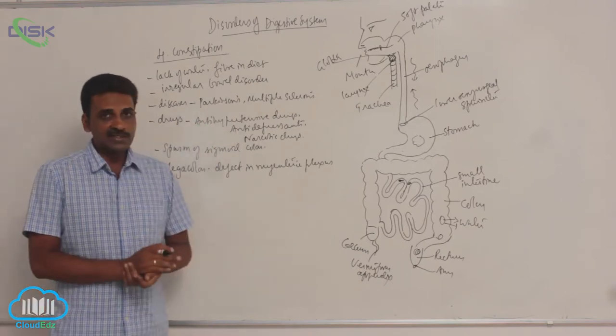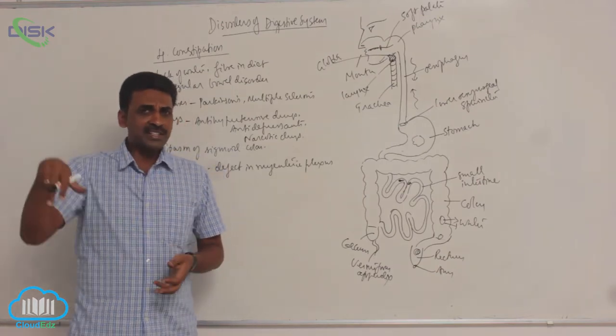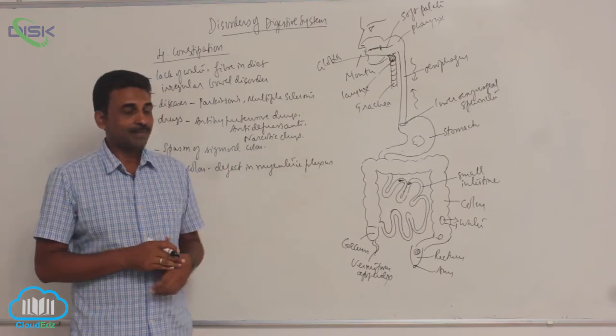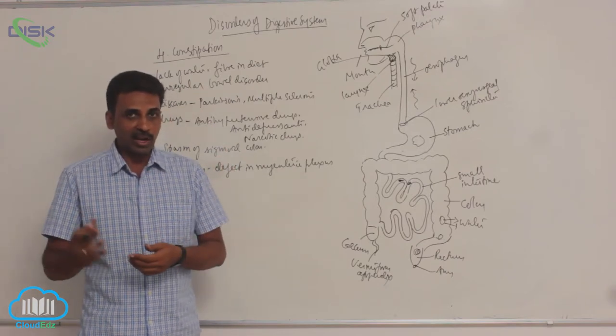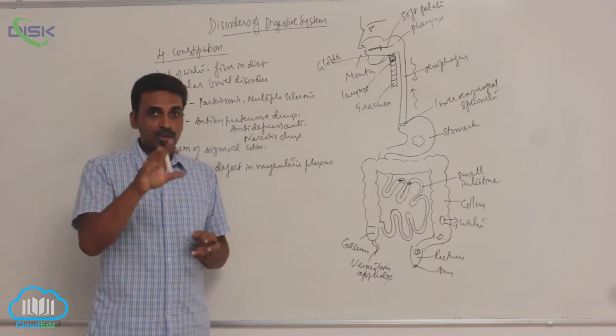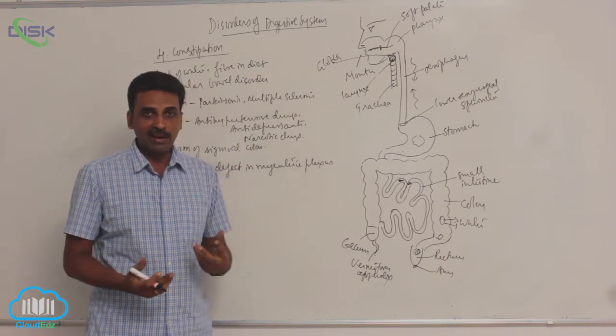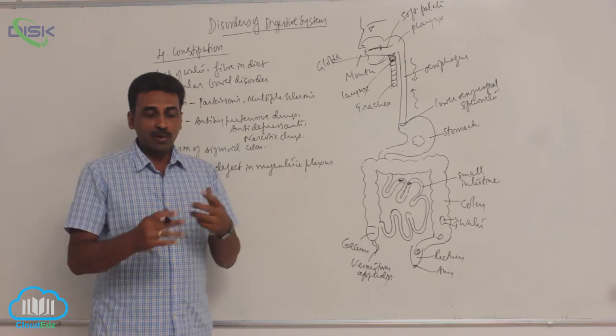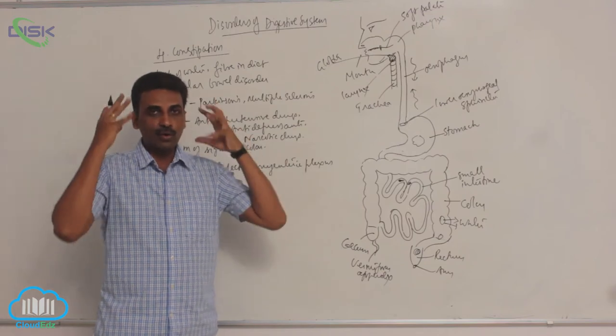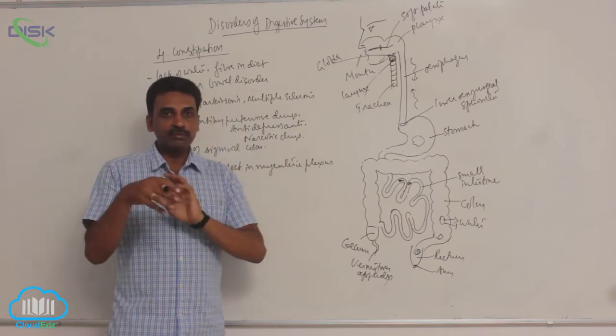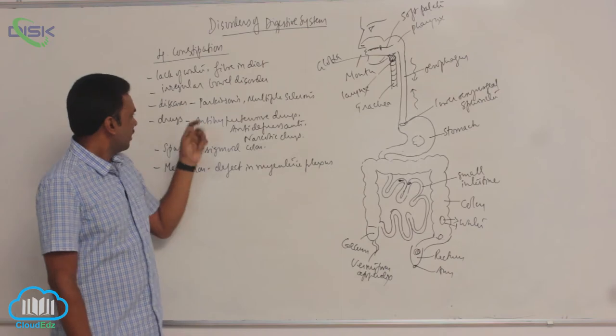Under certain diseased conditions, there is constipation. Parkinson's is a disorder of the central nervous system with reference to motor activities, where dopamine-producing neurons are damaged. Multiple sclerosis is a disorder of brain and spinal cord where myelin sheath surrounding neurons is destroyed. Some of those neurons are damaged, and it's a disease, so under certain diseases you will see constipation.